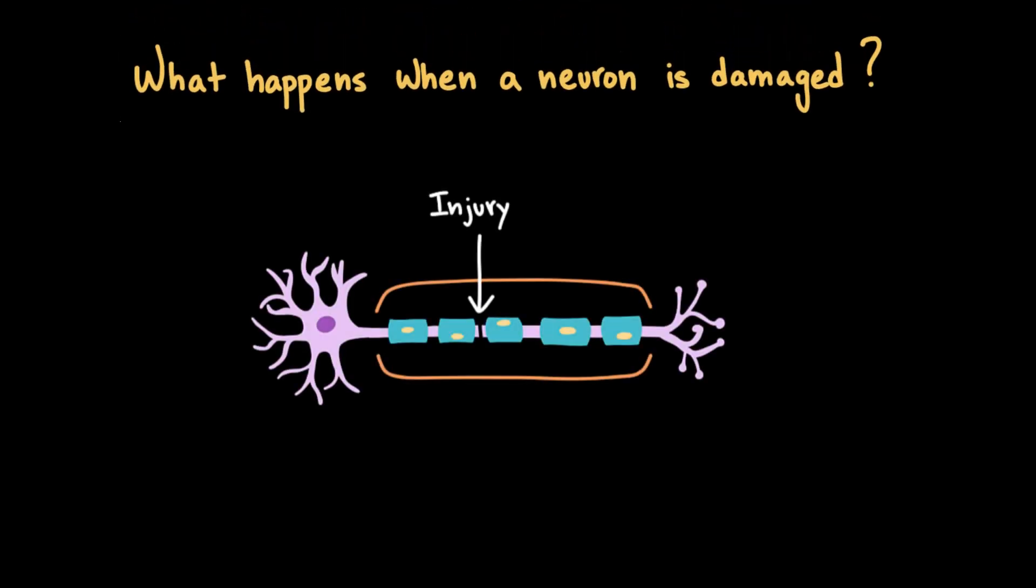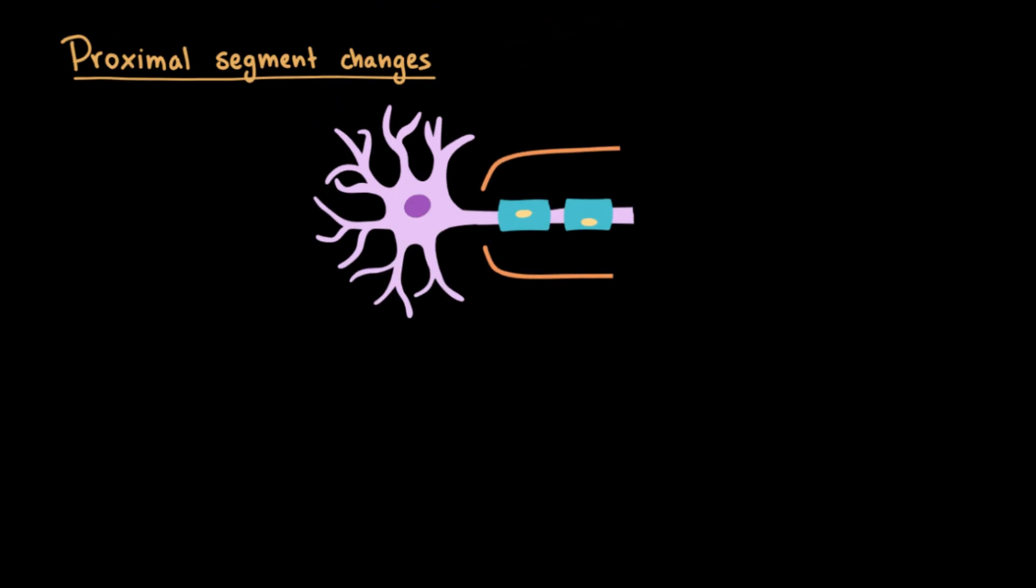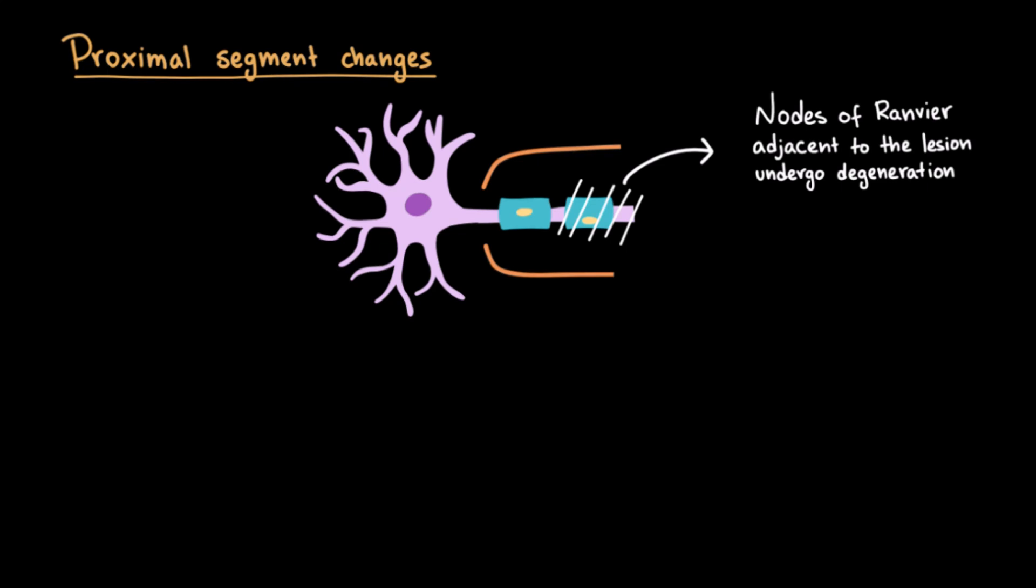Now, what happens if an axon is cut or severely damaged? We can divide the changes into what happens in the proximal segment and what happens in the distal segment. In the proximal segment, the part of the axon that's still attached to the cell body, survival is usually possible, since it can still get nutrients and support from the neuron's soma. But the part of the axon closest to the injury, usually just one or two nodes of Ranvier near the cut, undergoes some degeneration. This is called retrograde degeneration.